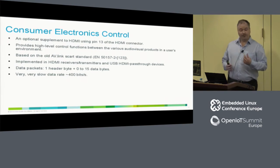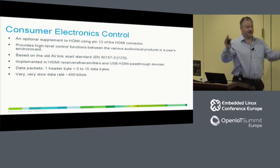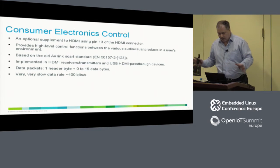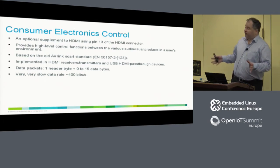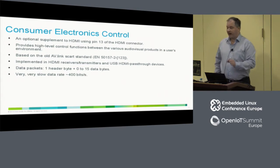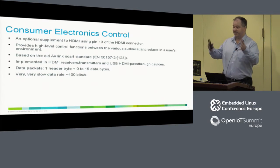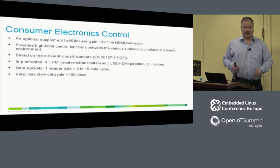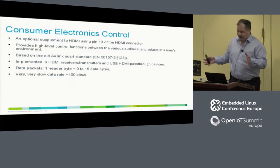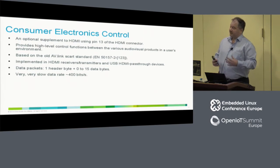So when you put in a DVD in your DVD player, the TV goes on automatically, and the AV receiver goes on and everything is set up correctly. It is based on the old AV link standard — you may remember those really big, ugly connectors — and it basically comes from the time when you had your video recorder and your TV and you wanted the same thing: put in your tape and automatically the TV turns on. The physical and electrical protocol is pretty much the same, though the higher level protocol seems to be quite different.